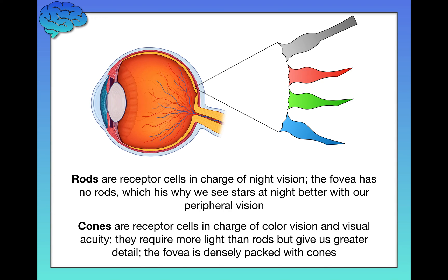An interesting point about rods: remember, there are no rods in your fovea. So if you're in a really dark environment trying to see something dim, it's actually worse to look directly at it — it's better to look a little bit off to the side. Think about why: if you look directly at a dim star, that star hits your fovea, which only has cones and not enough light for them to activate. So for stargazing, it's better to look an inch or two off to the side so that the star's light hits your rods in your peripheral retina, and you can actually see it.